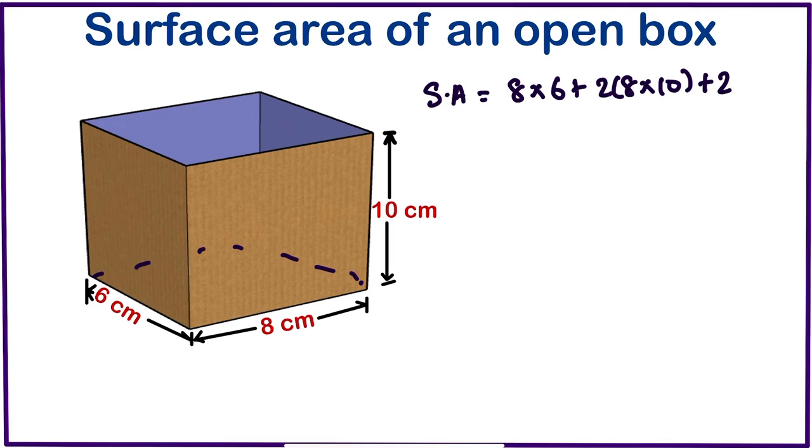Plus 2 times 6 times 10. So if we multiply, we are going to have 48 plus 80 times 2, 80 times 2 will give us 160, plus 60 times 2 will give us 120.